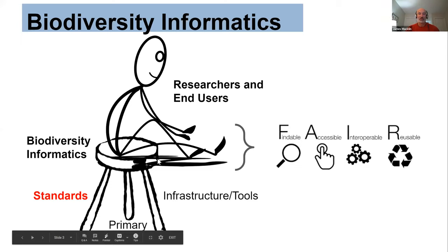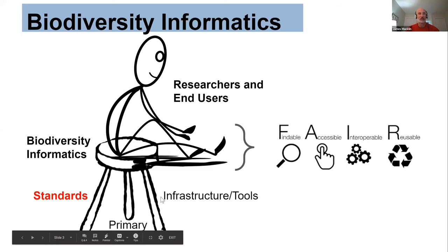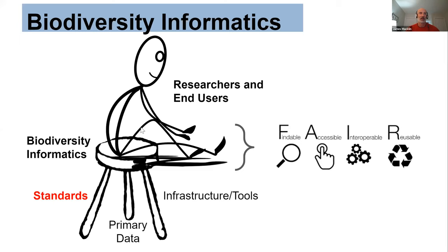Biodiversity informatics can be seen as the seat, a domain of researchers and implementers who rely on those three legs to process data and make it useful. Some of you are probably familiar with FAIR — it's become a much talked about set of principles for research data. The idea is that data should be Findable, Accessible, Interoperable, and Reusable, and I think that's a fairly good summary of what we do. Once you get past us as the seat, you come to the end users and researchers who need this data — and we need data to be fit for their purpose. Through standards, we make data fit for the kinds of use they need, including for big research questions like climate change and conservation.